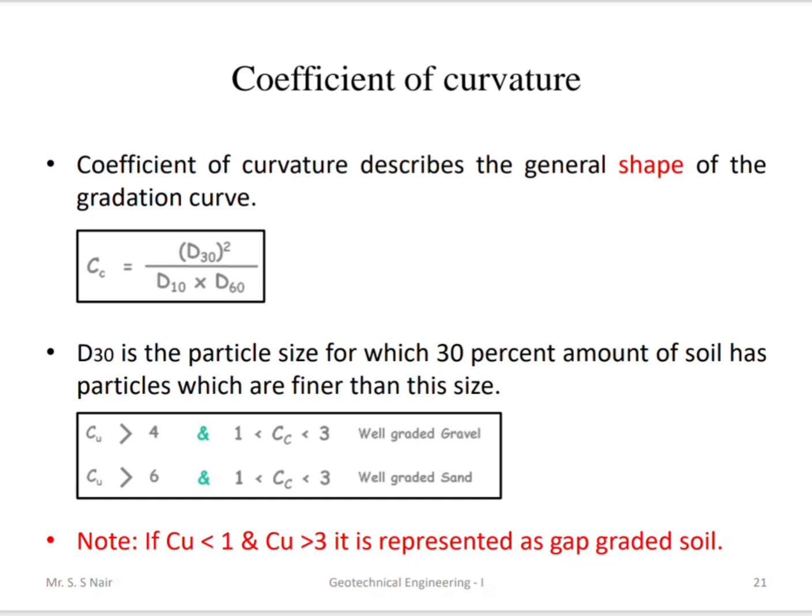The coefficient of curvature Cc determines the shape of the gradation curve and is calculated as D30² divided by (D10 × D60), where D30 is the particle size at which 30% of particles are finer. For well-graded gravel: Cu > 4 and Cc in the range 1 to 3. For well-graded sand: Cu > 6 and Cc in the range 1 to 3. If Cc is less than 1 or greater than 3, the soil is classified as gap graded.